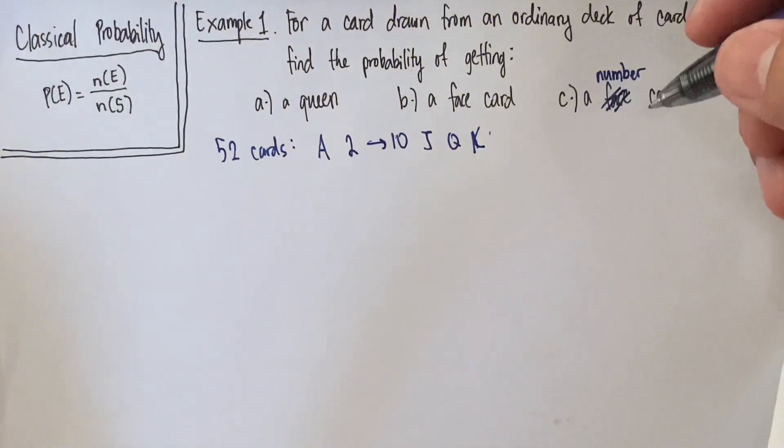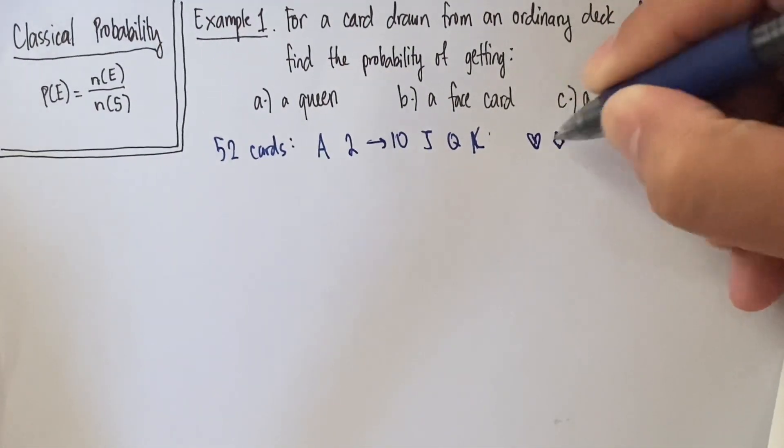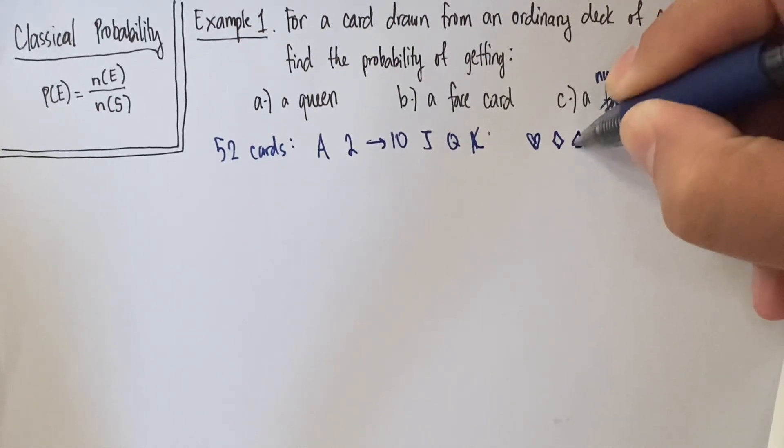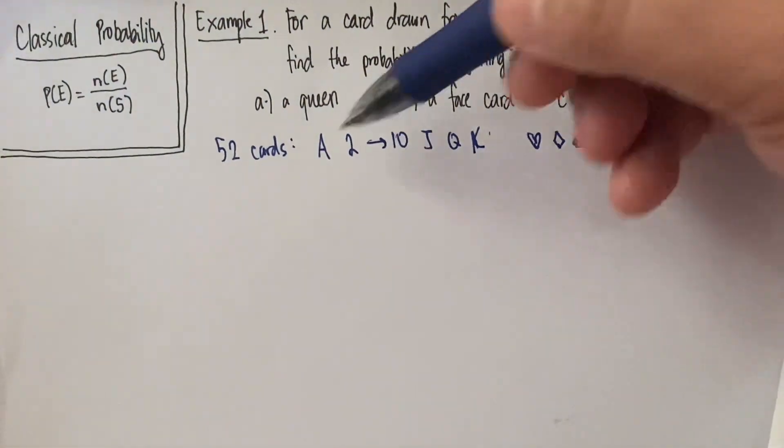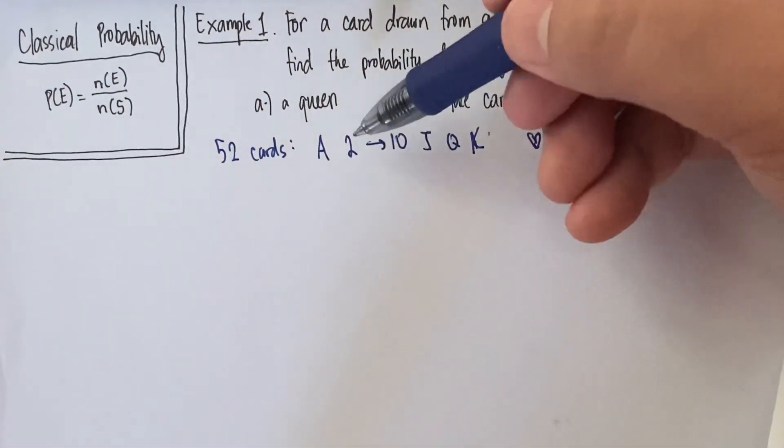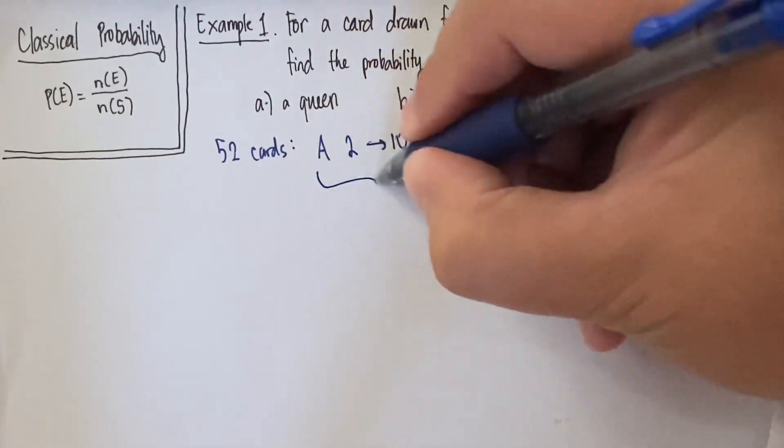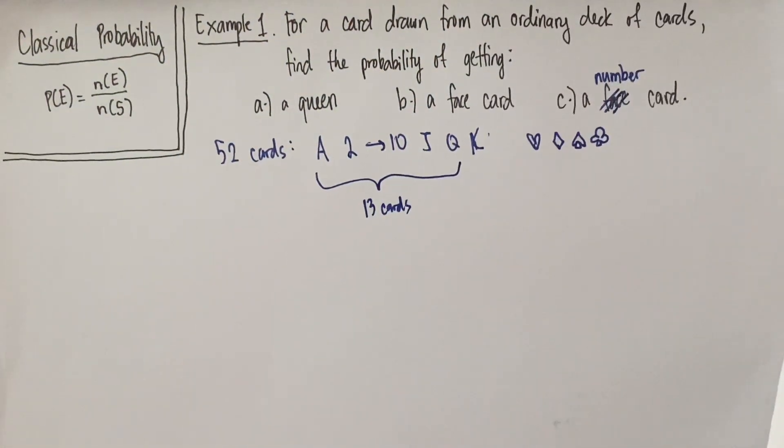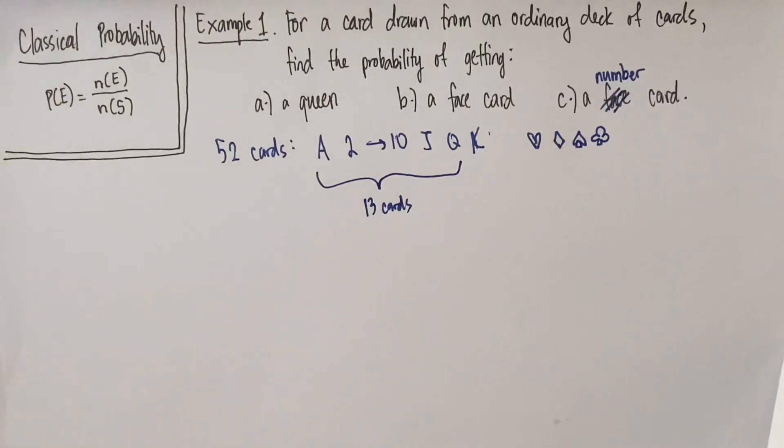We have 4 suits in a deck of cards. We have the hearts. We have the diamonds. These are what we call the red cards. We have the spades, and of course, the clubs. So we have 4 suits. In a single suit, we have 13 cards. So 2 to 10 is 9, then 10, 11, 12, 13. So there are 13 cards or 13 unique values per suit. So 13 times 4 suits that will give you 52 cards all in all in an ordinary deck of cards.